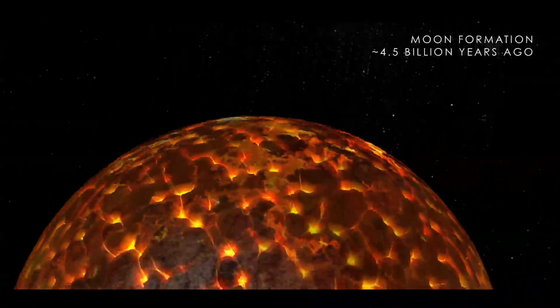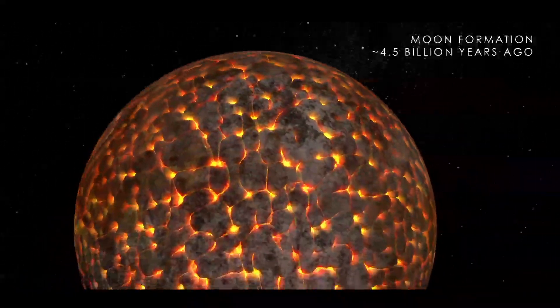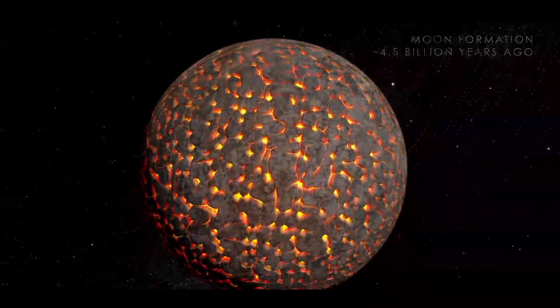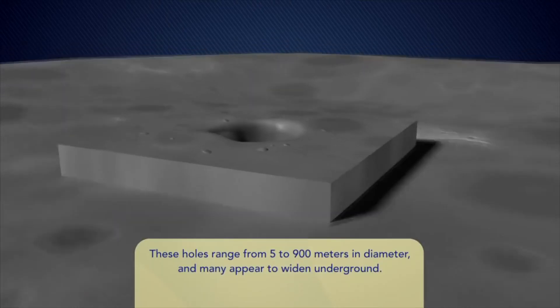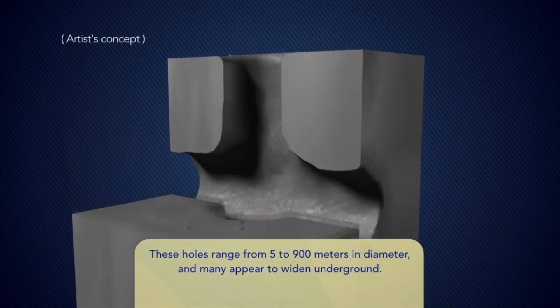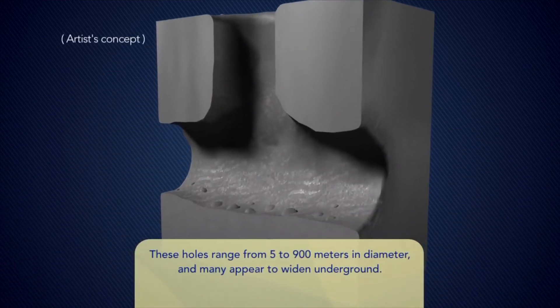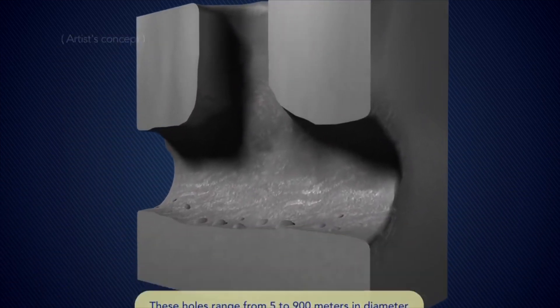A long time ago, the Moon was volcanically active. And where there are volcanoes, there are lava tubes. Lava tubes are empty channels in the ground, formed by lava flowing from volcanic eruptions.